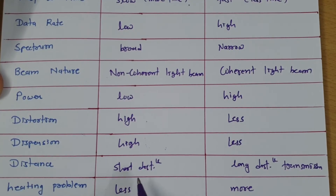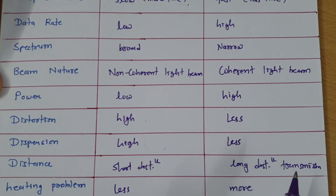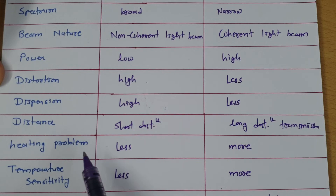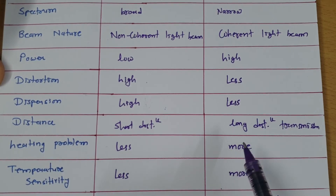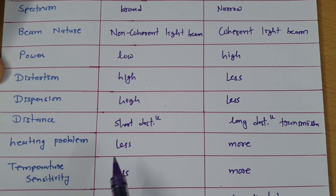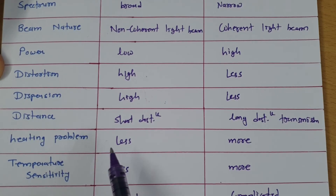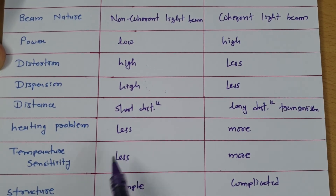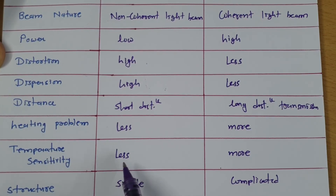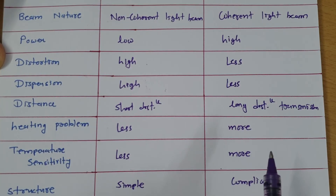LED is used for short distance transmission and laser for long distance. As laser sends high power there is a heating problem, while that heating problem is low with LED since it sends low power. Temperature sensitivity is less with LED and more with laser due to the greater heating problem.